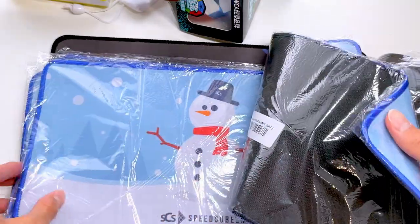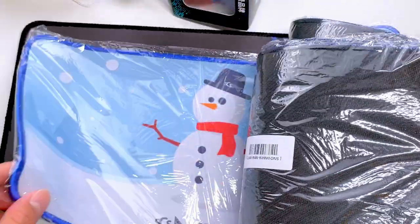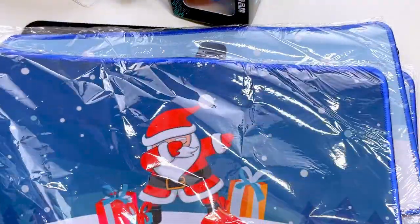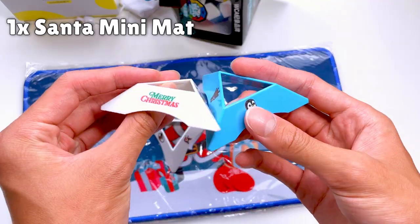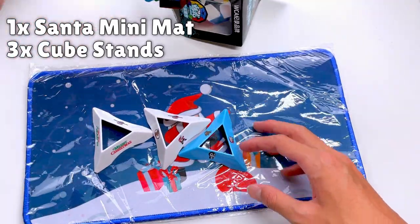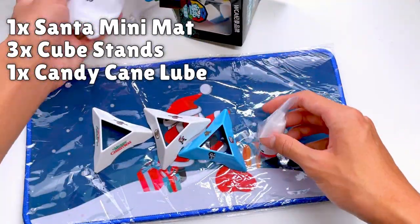Okay, I'll be completely honest with you guys, I really don't remember ordering four of the exact same mat. I'm just going to check my order real quick. I ordered the Christmas bundle, which I think consisted of this Santa mat, these stands are also part of it, and I think so is the candy cane lube.